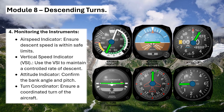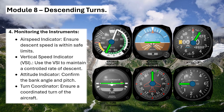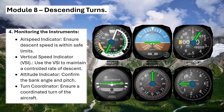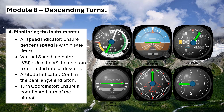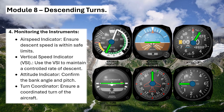4. Monitoring instruments – Airspeed indicator: ensure descent speed is within safe limits. Vertical speed indicator (VSI): use the VSI to maintain a controlled rate of descent. Attitude indicator: confirm the bank angle and pitch. Turn coordinator: ensure a coordinated turn of the aircraft.